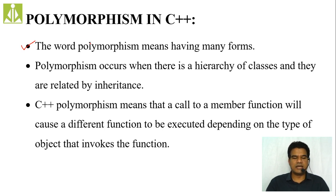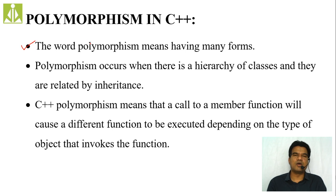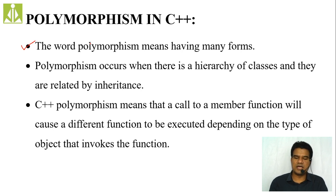In C++ when we talk about polymorphism, we make a call to a member function and that call will invoke a different body of that same member function — depending on what type of object we are using, based on that object type it will invoke a different function body. We will see this in detail with a simple example.